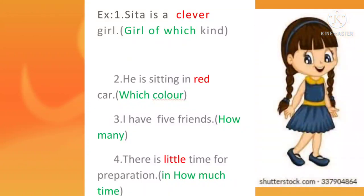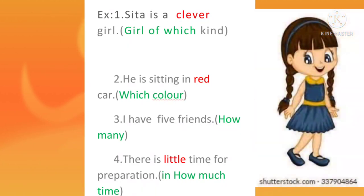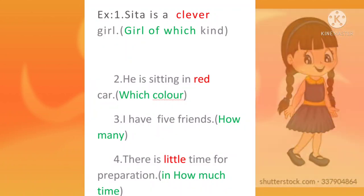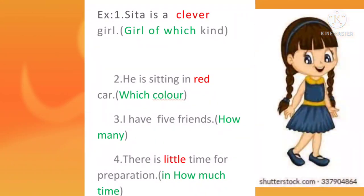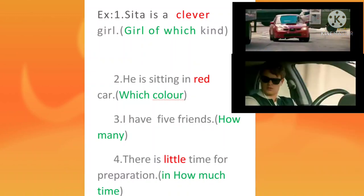For example, Sita is a clever girl. Here the noun is 'girl' and clever is the adjective. The adjective clever describes about the girl — the girl of which kind? Clever. And the second example: he is sitting in a red car. Which color is the car? Red. Here red is the adjective and car is the noun. The adjective red describes about the noun car.